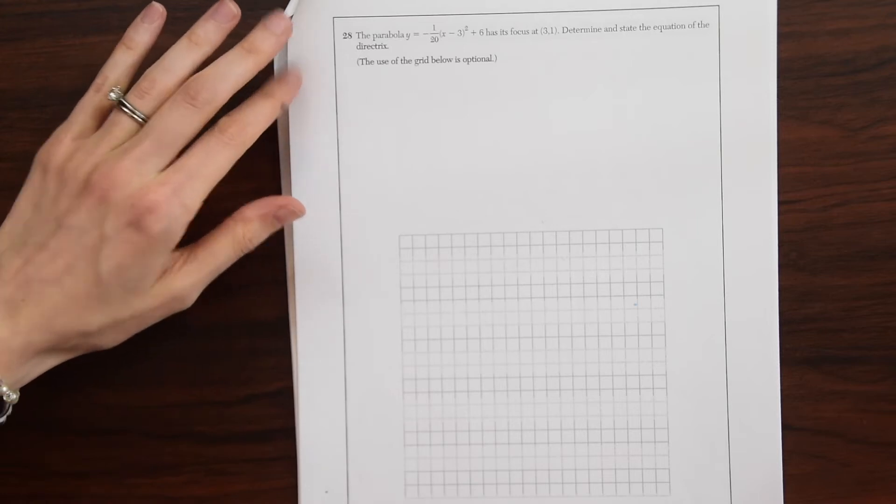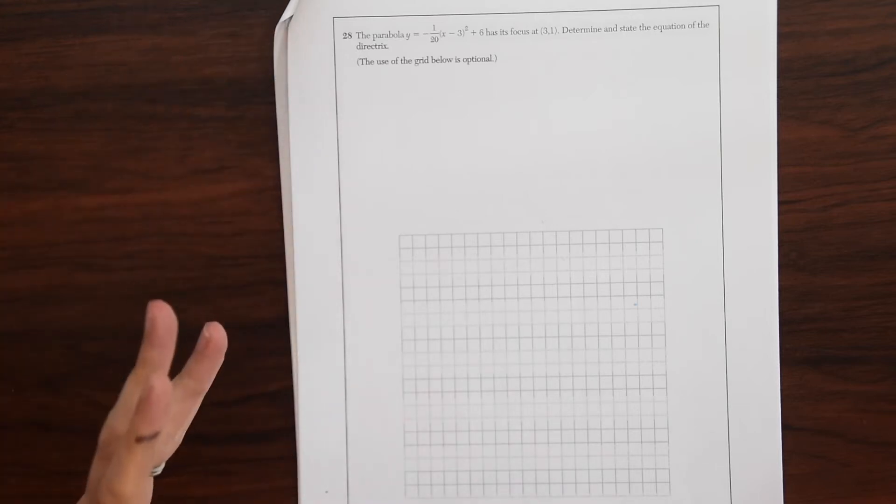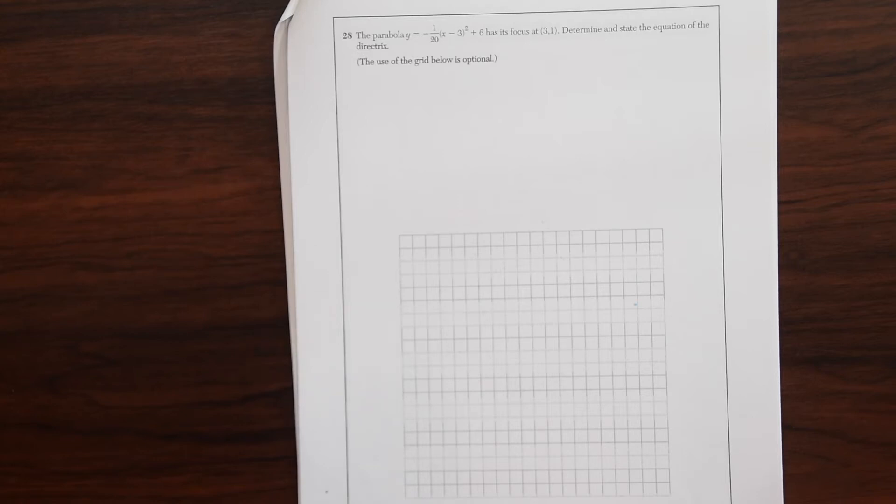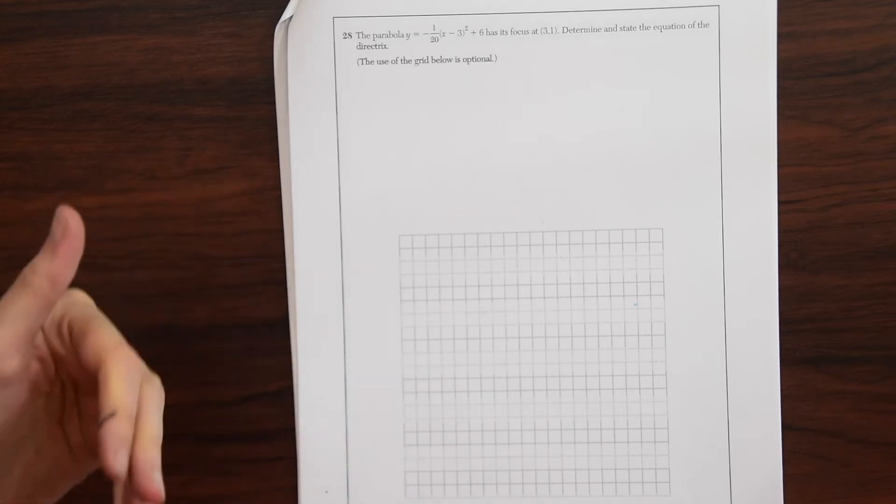The parabola y equals negative 1 over 20 times x minus 3 squared plus 6 has a focus at 3, 1. Determine the state of the equation of the directrix. The use of the grid below is optional.